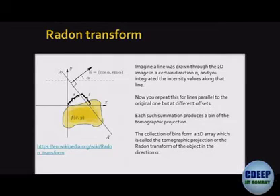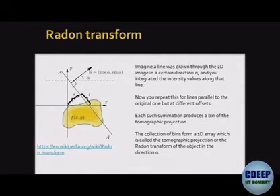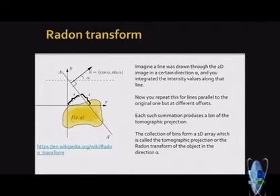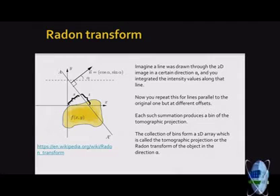A tomographic projection is defined as the Radon transform of the image in a particular direction. The aim of tomographic reconstruction is to reconstruct the internal details of an object. If you take a photograph you see only the surface, but you want to see what is inside — the heart, lungs, spine and so on. In inanimate objects you could cut them open, but that is not always recommended or feasible.